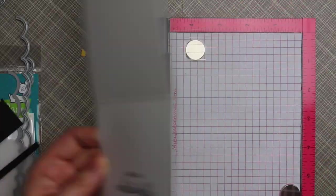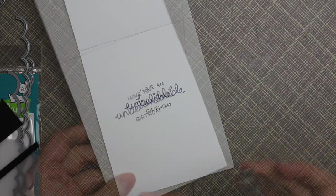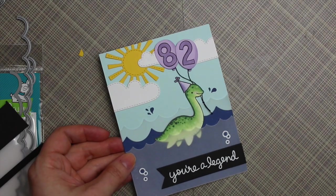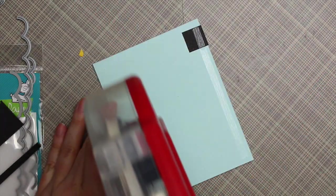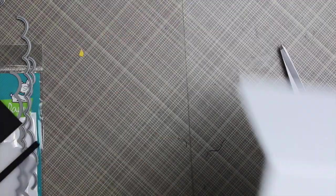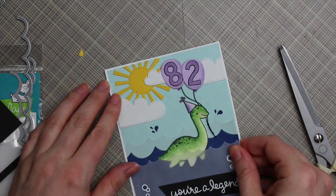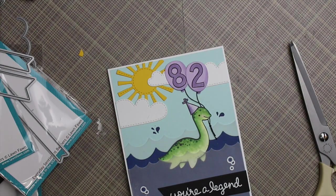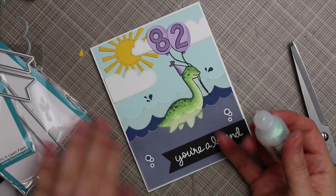And once that's done, I'm going to adhere the card front to the card base. So I just grabbed my ATG adhesive for that and applied a few strips to the back of the card front and then adhered that to the card base itself. And I had purposely cut down the blue cardstock to be just slightly smaller than the A2 card.